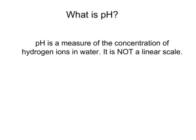pH is a measure of the concentration of hydrogen ions in water. It's not a linear scale, which is why smaller numbers have higher concentrations — it's rather complex, something you'd learn about at A level.